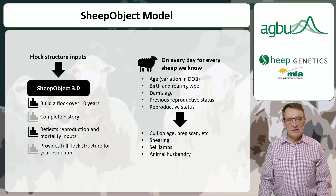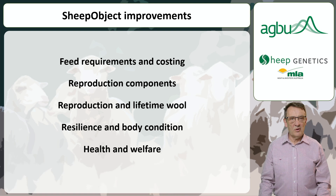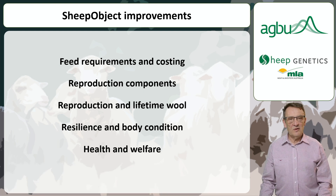We can apply culling regimes, harvest wool, sell lambs and apply husbandry operations in a totally flexible way to model a variety of systems. This new model incorporates numerous improvements such as precise feed requirement calculations, separate valuation of reproduction component traits, and the modelling of reproduction's impact on lifetime wool production. Moreover, we've included measures for ewe resilience via body condition score and integrated health and welfare traits, ensuring a more comprehensive and accurate representation. We'll delve into these enhancements in greater detail in other videos of this series.